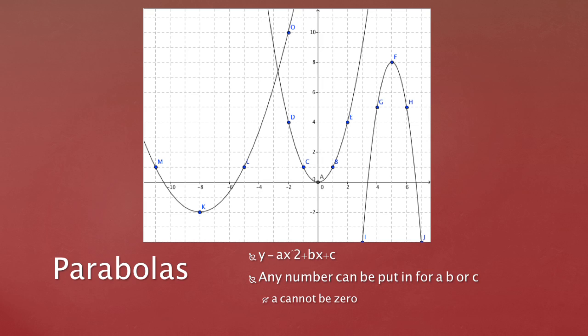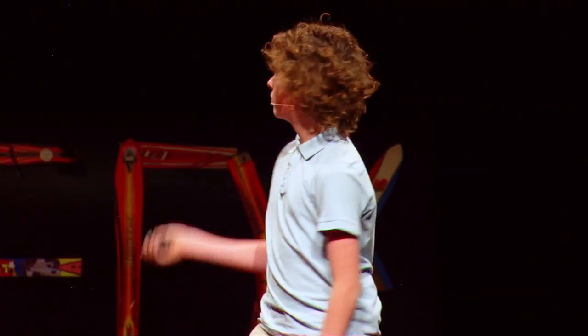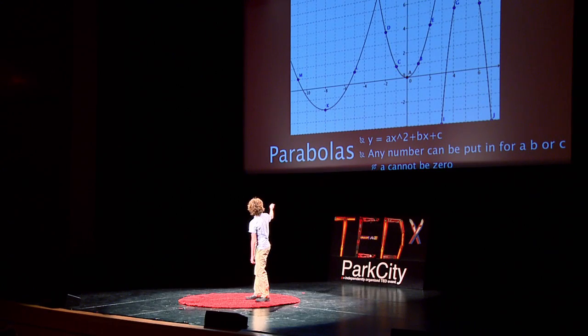And parabolas — these are parabolas, as you can see — they have a basic equation which they can be boiled down to, which is y equals ax squared plus bx plus c. You can put in any number for those letters, because they're variables, except for a, which can't be zero. And if you graph it, you'll get something like this — it's a parabola.